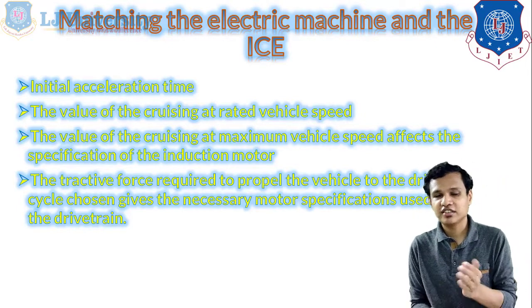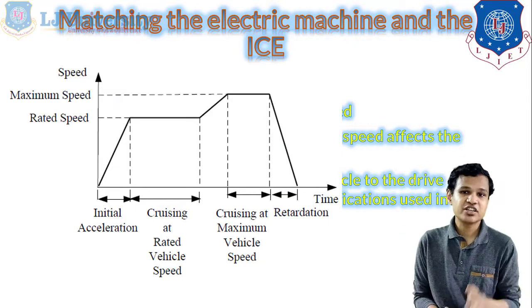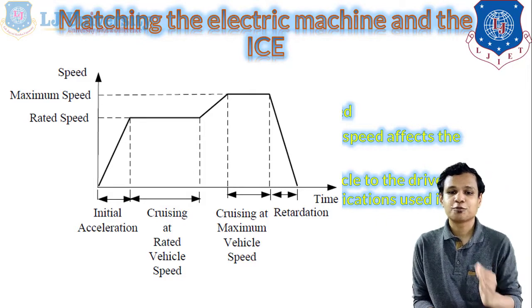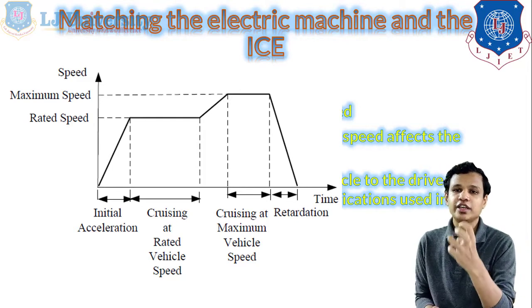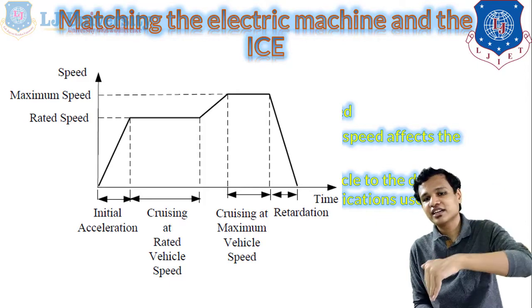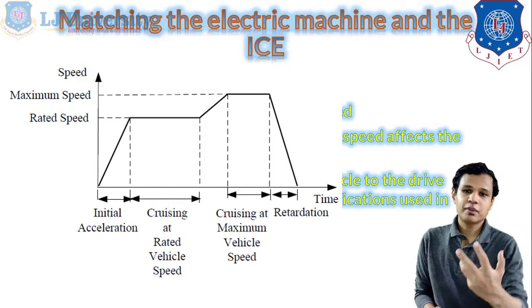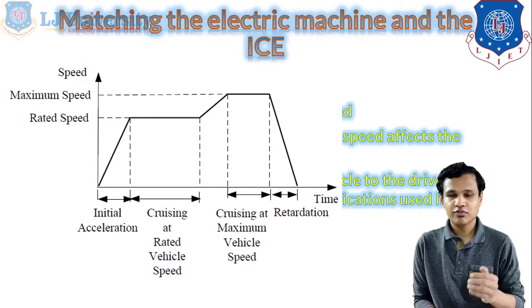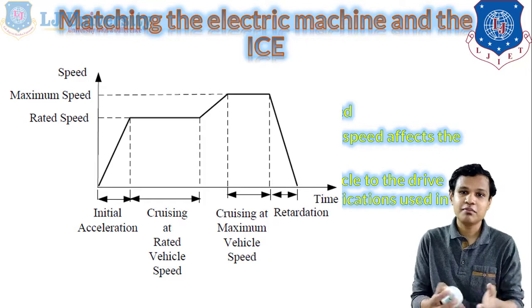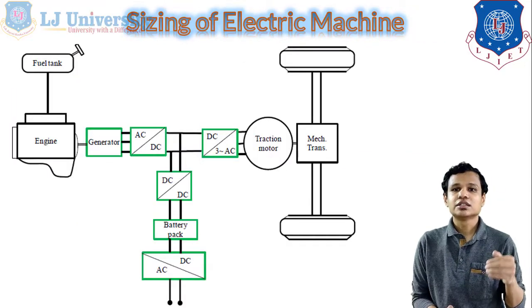The diagram shows different conditions for matching the IC engine and electric machine. During initial acceleration the speed increases, then the vehicle cruises at constant speed, reaches maximum speed, and finally decelerates. According to this diagram, the proper matching of the electric motor and IC engine is done so that the power from the electric motor can be used in combination with IC engine power in the hybrid electric vehicle.